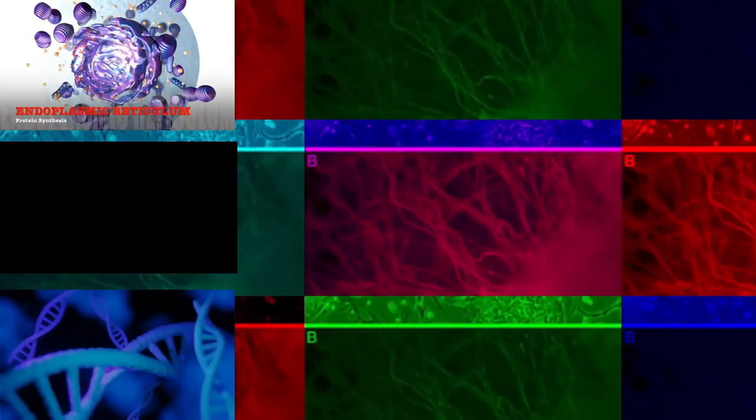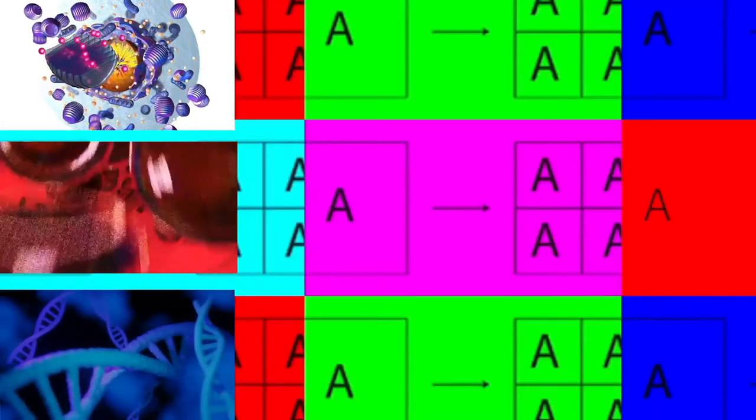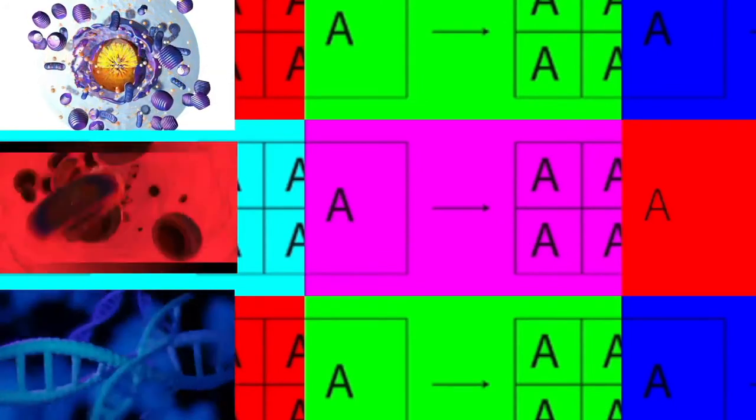There is also evidence of prokaryotic membrane-bound organelles. While typically being unicellular, some prokaryotes such as cyanobacteria may form large colonies. Others, such as myxobacteria, have multicellular stages in their life cycles.